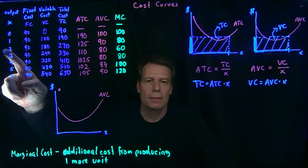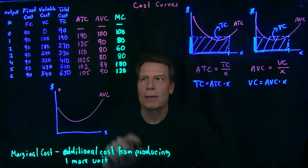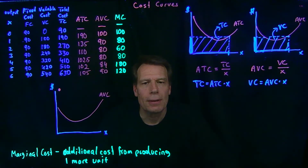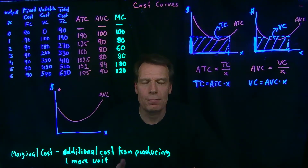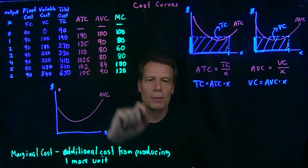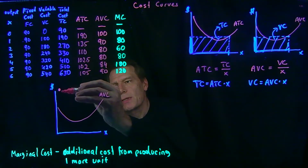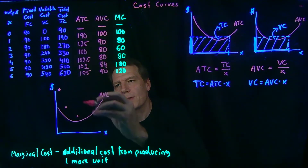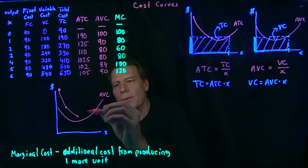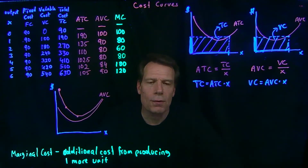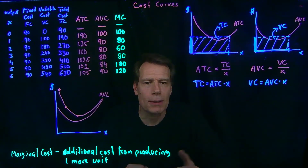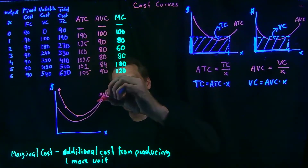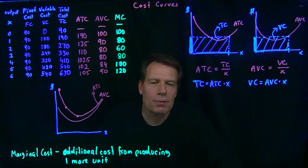If we produce two units, the difference between average total cost and average variable cost shrinks to 45 — half the fixed cost — because the average fixed cost is only half of the fixed cost. At three units, the difference shrinks to 30, which is a third of the fixed cost. So you can see that the average total cost curve gets closer and closer to the average variable cost curve and eventually converges. The average fixed cost of a million units is the fixed cost divided by a million — a very tiny quantity — so at large quantities, the average total cost curve becomes very close to the average variable cost curve.